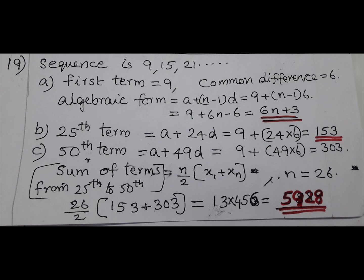Part C: Find the sum of terms from 25th to 50th. 25th term, A plus 49. Last term. First term 25th term 153. Sum: 153 plus first term plus last term, 5928.